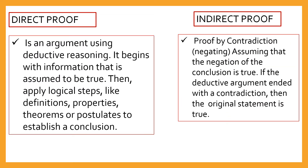Direct proof is an argument using deductive reasoning. It begins with information that is assumed to be true, then applies logical steps like definitions, properties, theorems, or postulates to establish your conclusion.